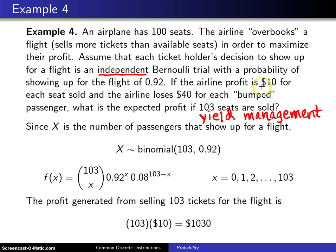The airline profit is ten dollars for each seat sold and the airline loses forty dollars for each bumped passenger, and we want to know what is the expected profit if a hundred and three seats are sold.